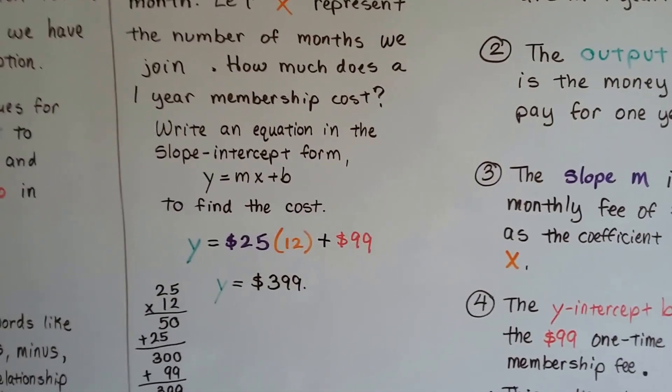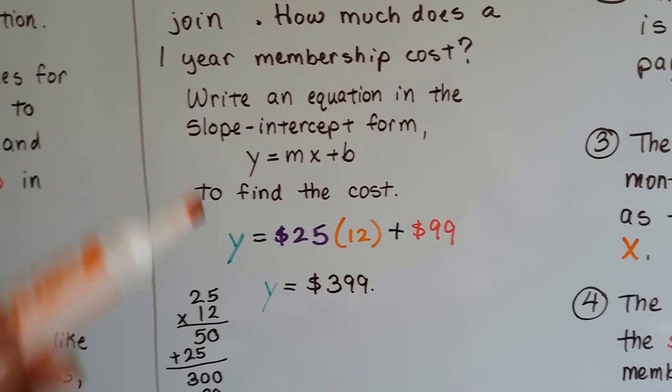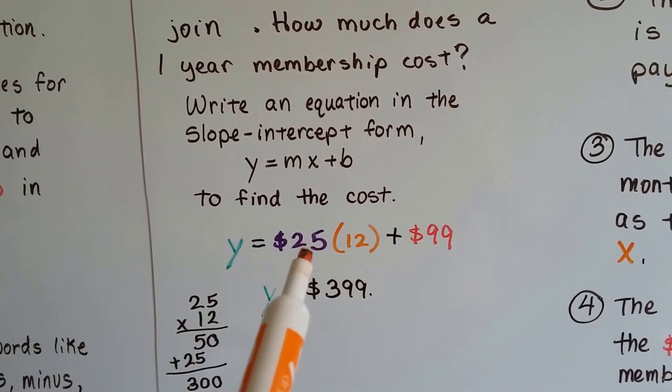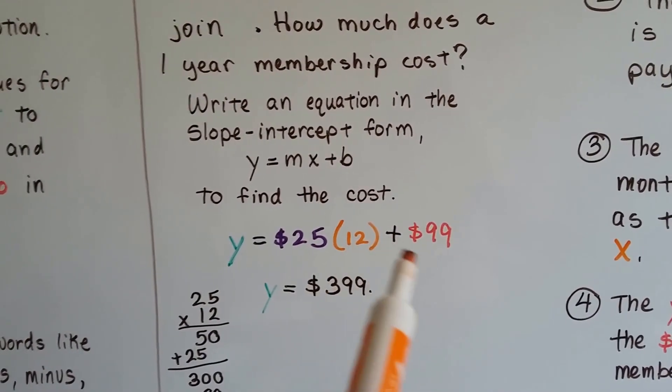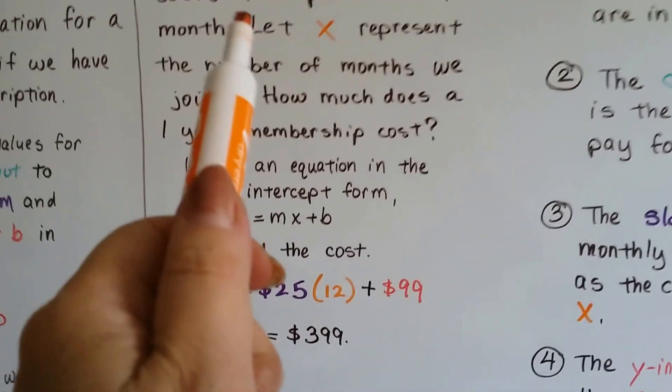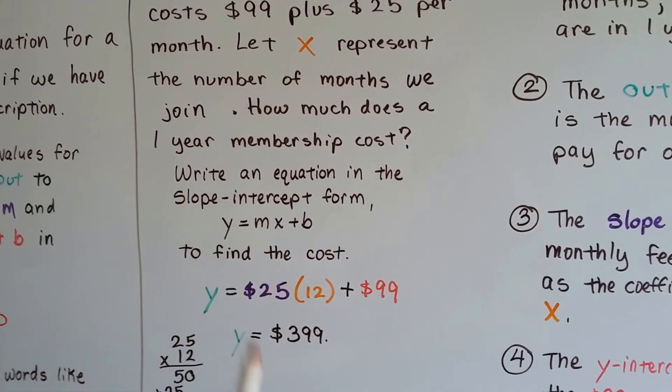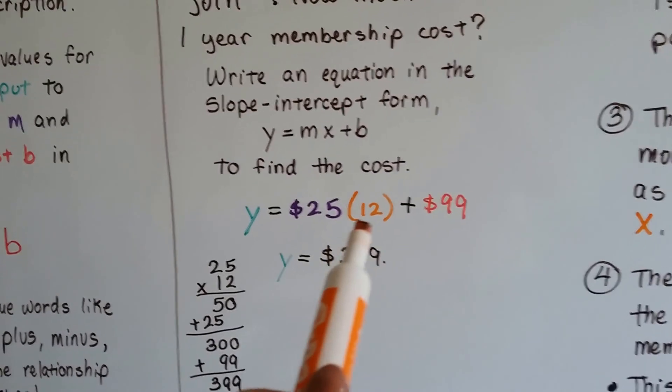This is the form of the equation, and we've got $25 a month for 12 months plus our $99 initial fee. We do 25 times 12, and that's 300.